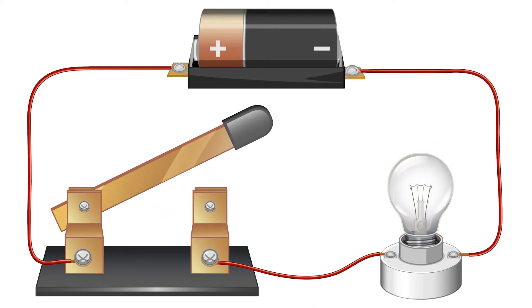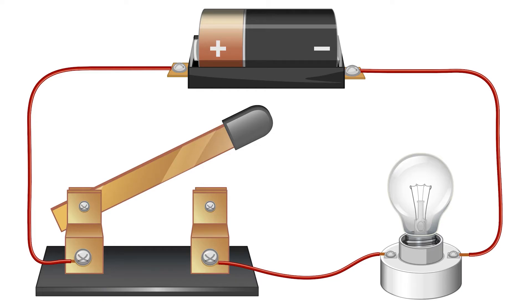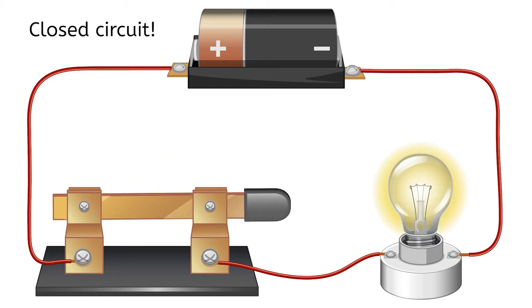But what if we open the switch? Now we have an open circuit, which does not work because the electrons no longer have a complete path to travel on. Luckily, fixing our circuit is as easy as closing the switch and the lights come back on.